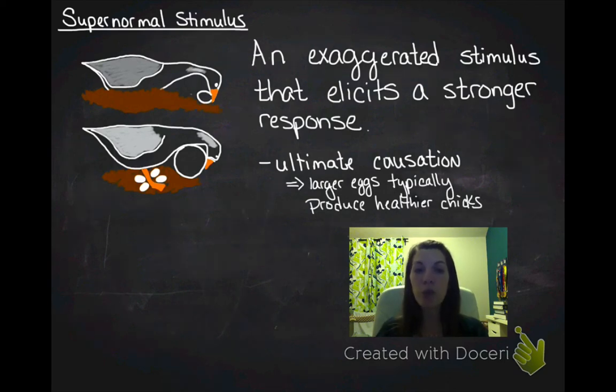In a supernormal stimulus, a greater than average, an artificially big stimulus is going to trigger an artificially large response. That's all that that means.